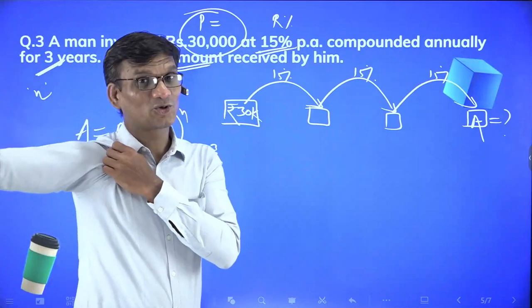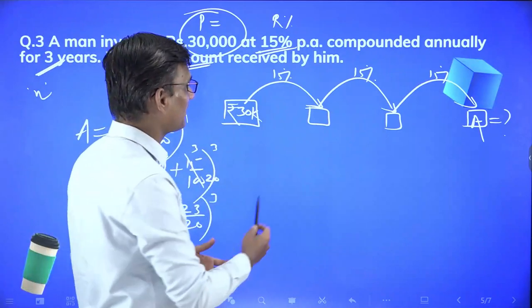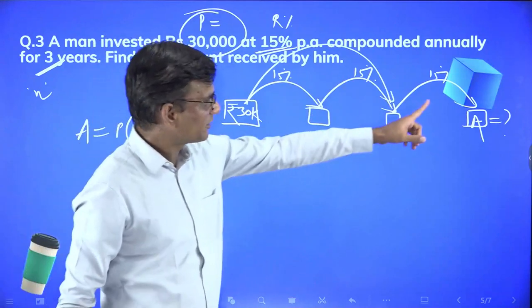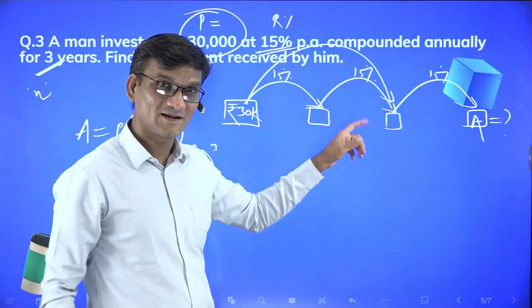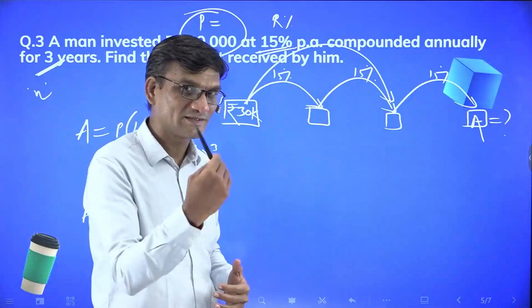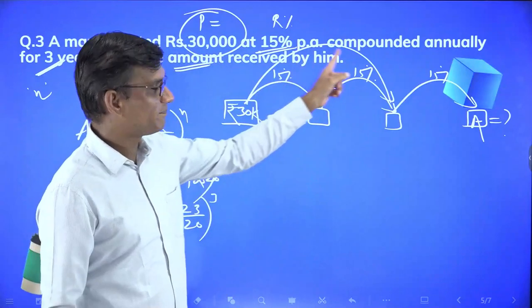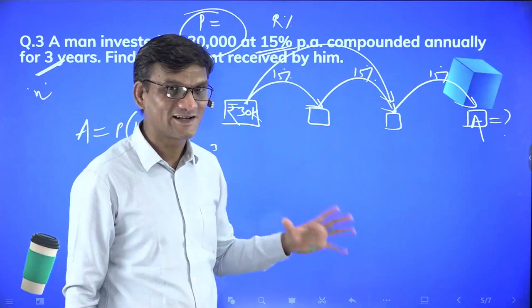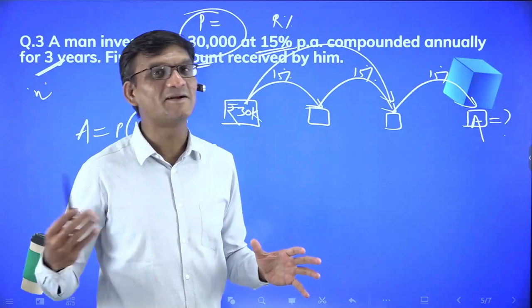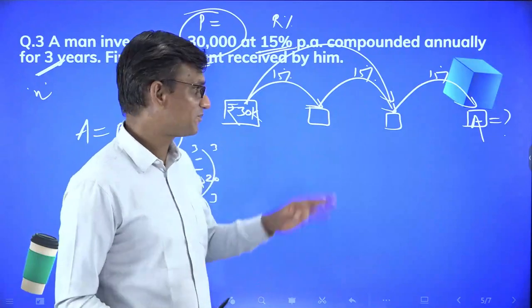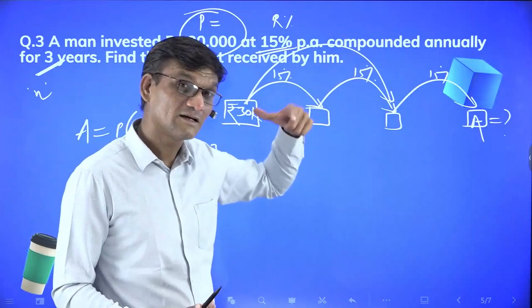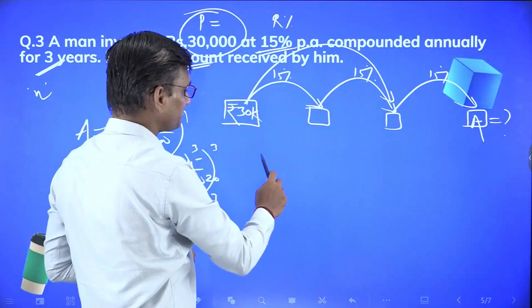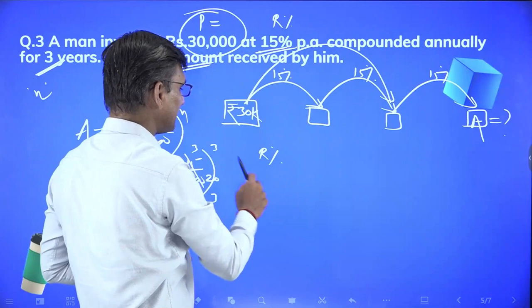Students may ask: we've seen equivalent of two successive changes, how do we see equivalent of three successive changes? With the school formula amount equals principle times (1 plus r by 100) power n, you will also struggle. But I'll show you how to apply this formula.